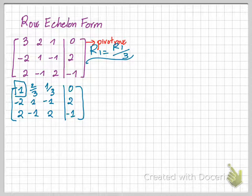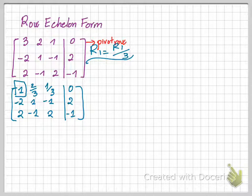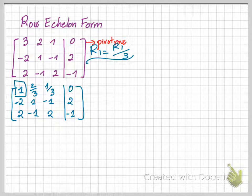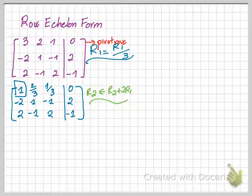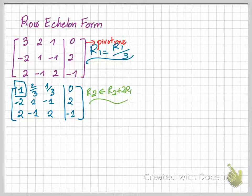Now that the leading coefficient of the first row is already 1, then you can use the first row to transform the second row and the third row so that these two values here are gonna be 0. So the two operations that we can use are here. In order to transform row 2, you take row 2 plus 2 row 1, which is the pivot row.